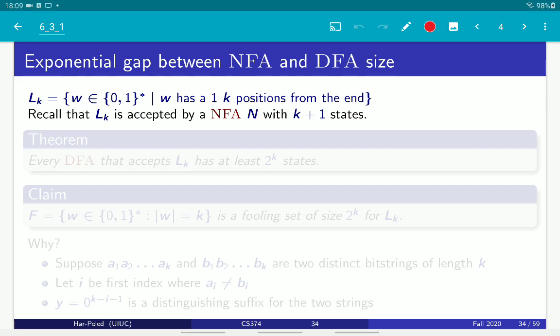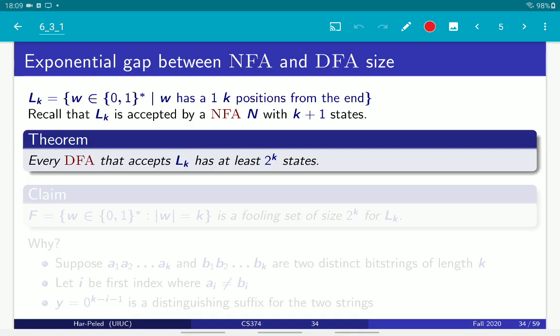And the claim is, of course, that any DFA that accepts this language has at least 2 to the K states. And the proof is, of course, immediate, right?